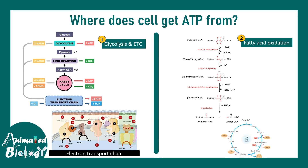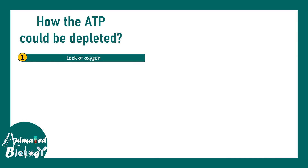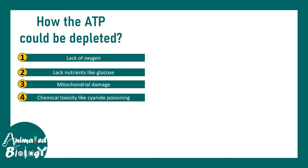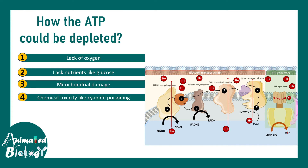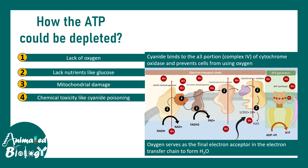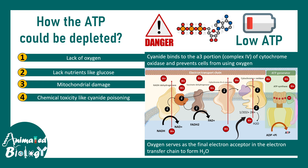How does ATP depletion occur? There could be various reasons such as lack of oxygen, lack of nutrients, mitochondrial damage, or chemical toxicities like cyanide poisoning. Cyanide binds to the A3 portion of complex IV, preventing the electron transport chain from functioning. Also, oxygen serves as the final electron acceptor in the ETC to form H2O, so when oxygen is depleted, this step cannot happen. This entirely affects oxidative phosphorylation, resulting in low ATP.